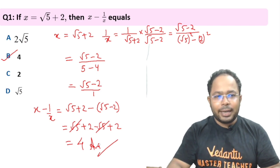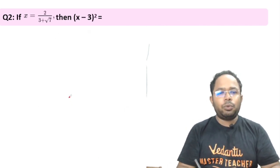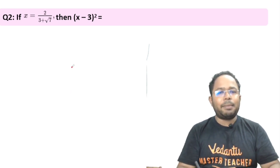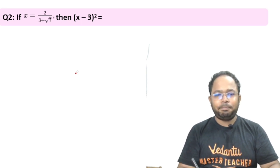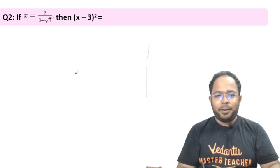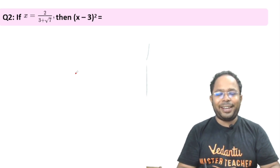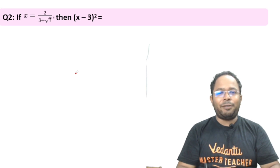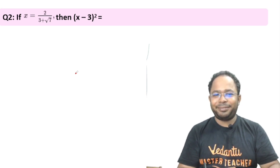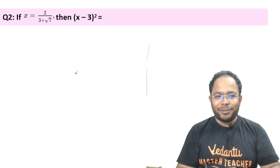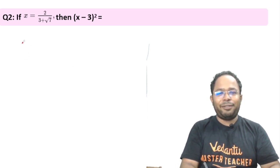Let's move on to the next question. If x equals 2/(3 + √7), then (x − 3)² would be how much? Click the pause button, solve it, then verify against my solution.